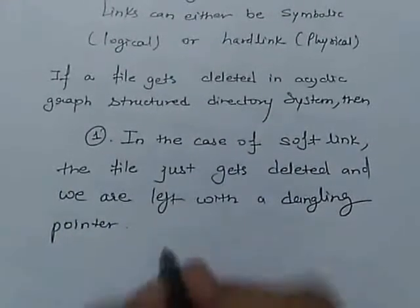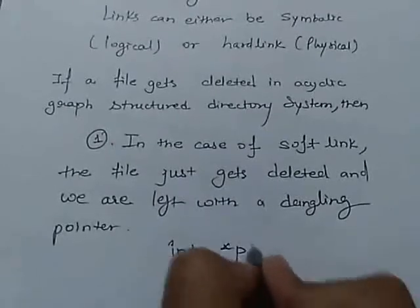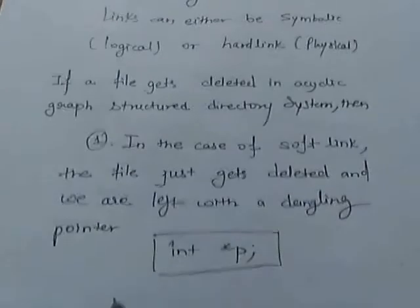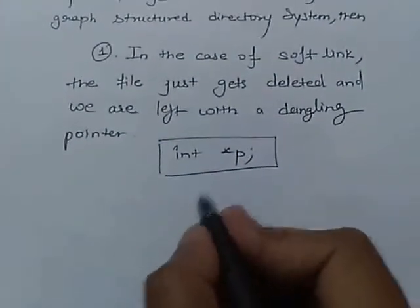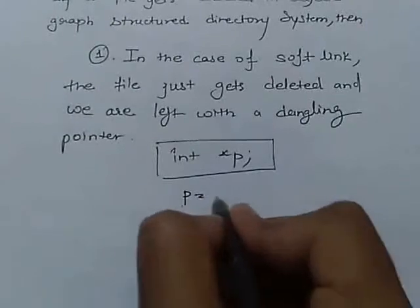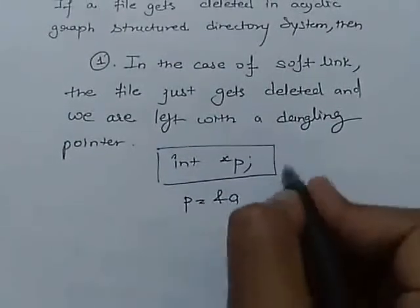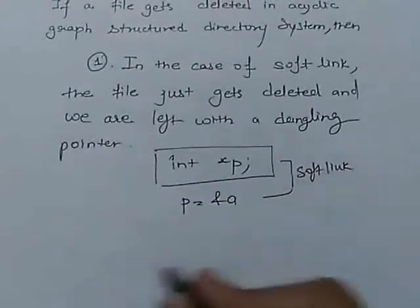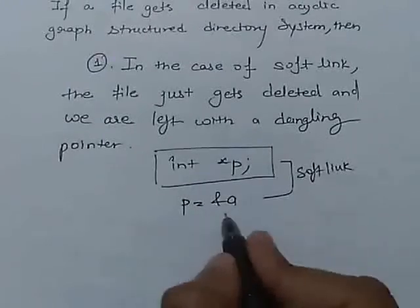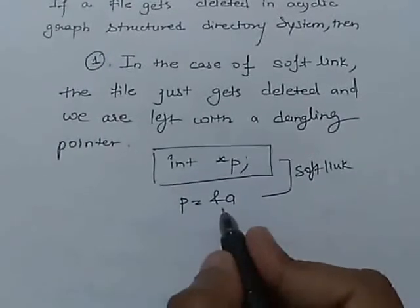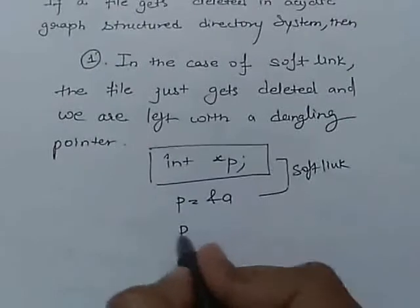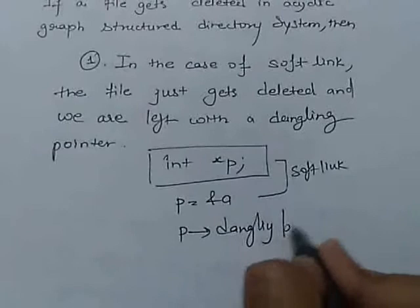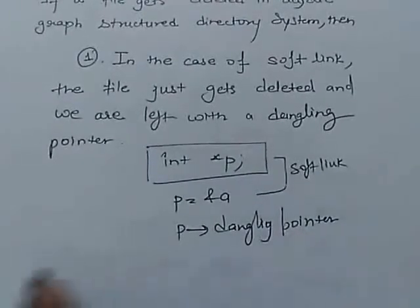As we know, if we want to declare a pointer, we have to put the statement like this in C programming. If we are assigning the address and it is simply a dummy program, then it is a soft link. If this goes into the RAM and the program is running, then it becomes a hard link. If nothing is assigned to this pointer, then it is known as dangling pointer.